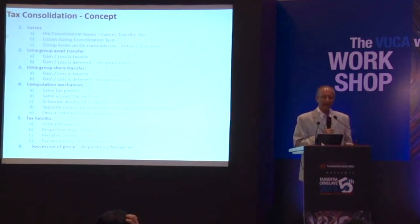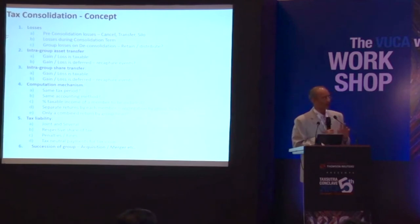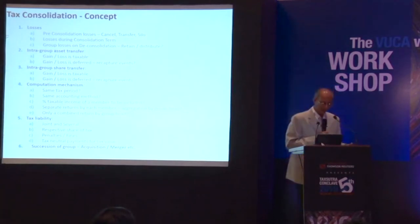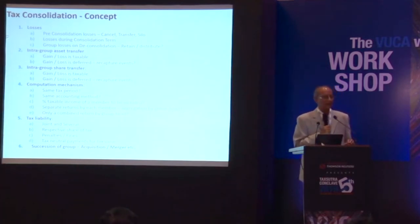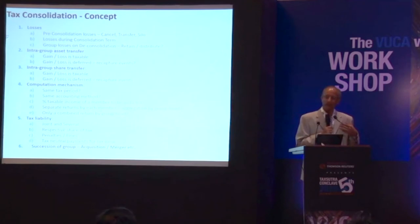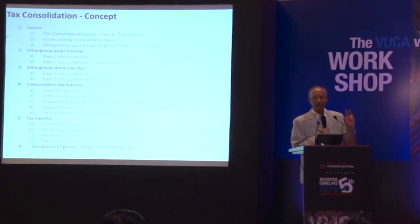On accounting methods, most countries say you don't have to have the same accounting method — each company is regulated differently and may follow different accounting principles. On minority interests: if a subsidiary is only 80% owned, domestic consolidation generally consolidates 100% of the income without apportioning the 20%. But in cross-border worldwide consolidation, for foreign companies, you pick up only that income attributable to the shareholding or control interest.